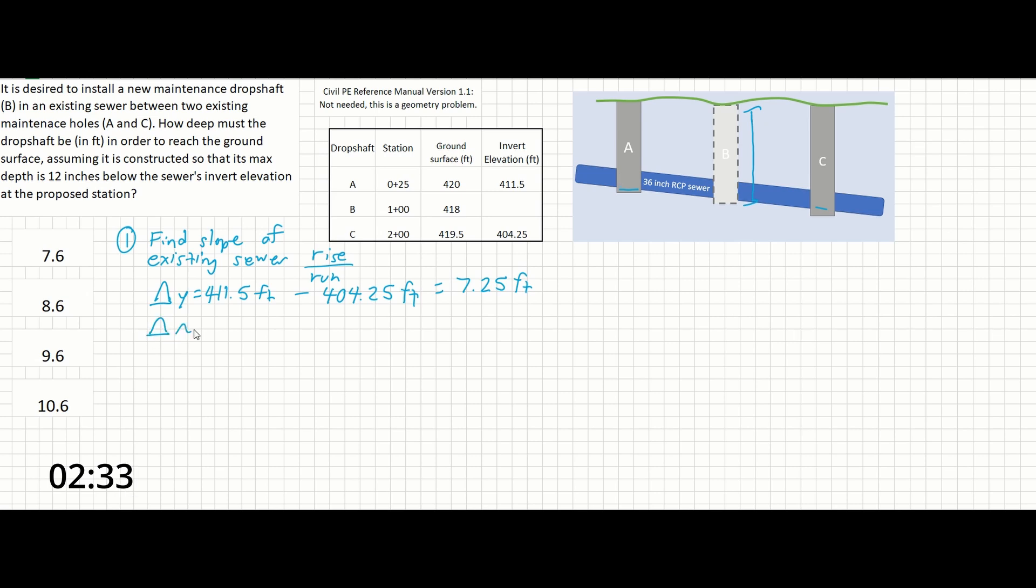We can do the same thing here and get our delta X, and that's just going to be the difference between the two stations. So stations written in this value can simply be thought of as the hundreds column on this side and everything after it on this side. So 2 plus 00 will be 200 feet, and 0 plus 25 will be given as simply 25 feet. So this is 175 feet.